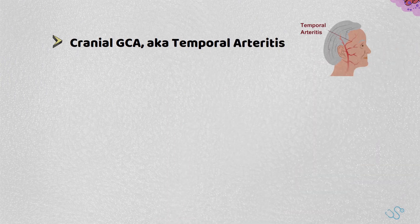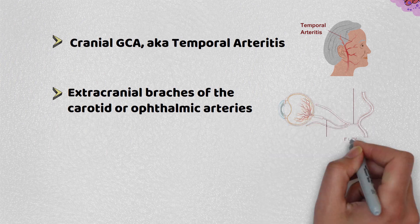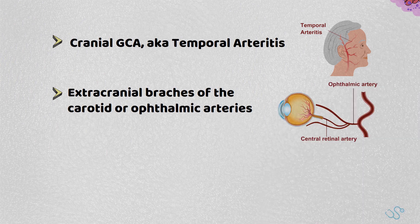The most common type, cranial GCA, also known as temporal arteritis, is when one of the extracranial branches of the carotid or the ophthalmic arteries are affected, typically in distal branches.